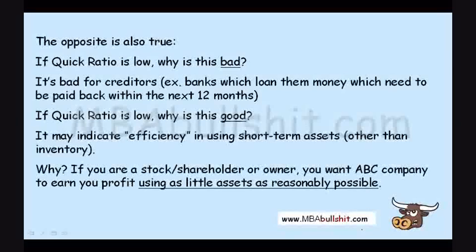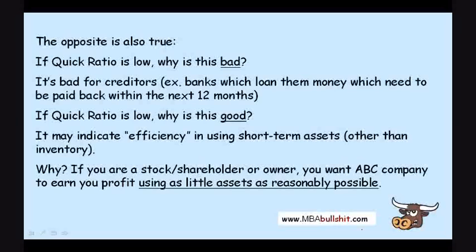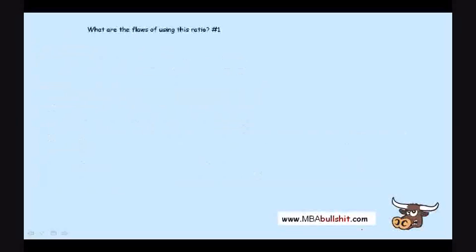If you are a shareholder, you want ABC Company to earn profit using as little assets as reasonably possible. A low quick ratio indicates that maybe you are not using many assets but you are still earning a good amount of profit.